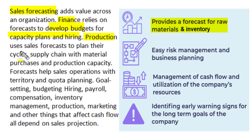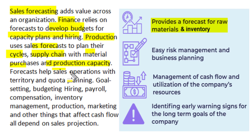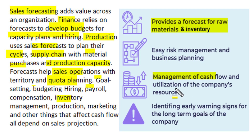The production department uses these sales forecasts to plan their production cycles, material purchases, and management of the supply chain system, and they operate their production capacity as per the sales forecast available to them. The sales department uses forecasts to manage their sales operations across different territories and makes quota planning for their sales teams. For an organization, sales decide revenues, and management of cash flow and utilization of company resources greatly depends upon sales forecast. Sales forecasting can provide early warning signs and help make appropriate adjustments as per long-term goals of the company.